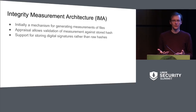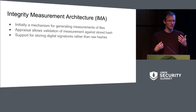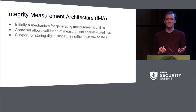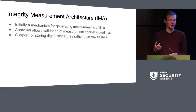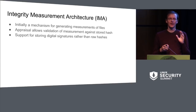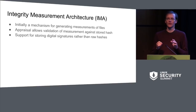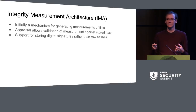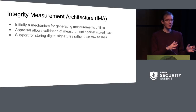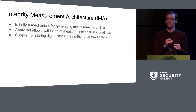IMA — Integrity Measurement Architecture — as Mimi mentioned, is a mechanism that initially generated measurements of files, largely executables, but configurable to measure all files accessed by different processes. IMA appraisal was a later addition that allows validation of that measurement against a stored hash or a stored digital signature. If an IMA policy says to appraise a file under a specific set of circumstances, the kernel measures the file, compares it to the hash or digital signature, and blocks access if the measurement does not correspond to the stored copy.